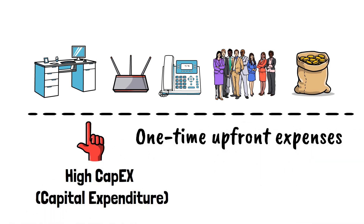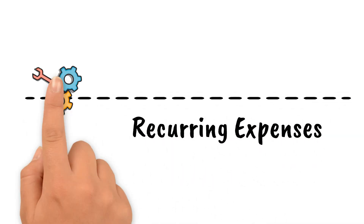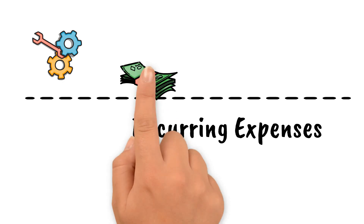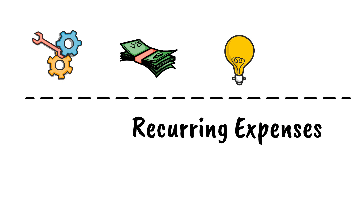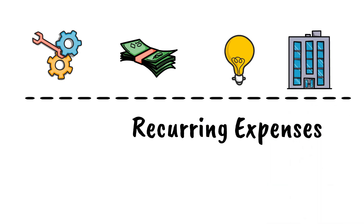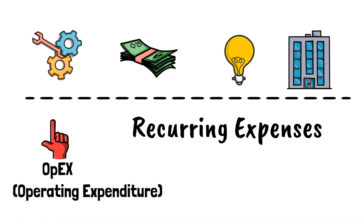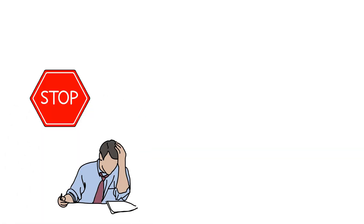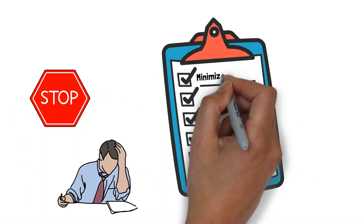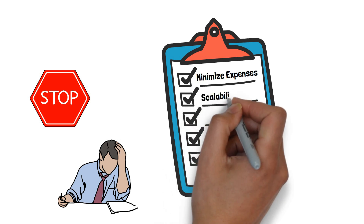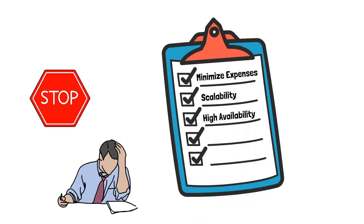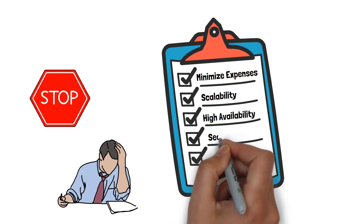You would also have some recurring expenses such as cost of regular hardware maintenance, salaries to employees, electricity bills of the office, monthly building rentals, and so on. These recurring operating expenses are called OpEx, or operational expenses. These are nothing but the roadblocks for expansion, and your goal is to minimize your CapEx and OpEx and build a system that is highly scalable, highly available, and fault-tolerant — a system with built-in security and high performance.